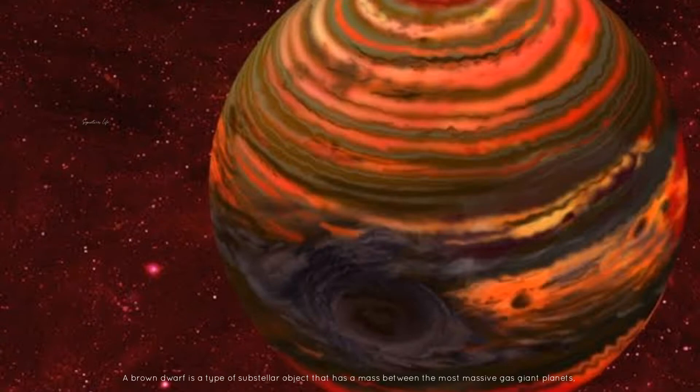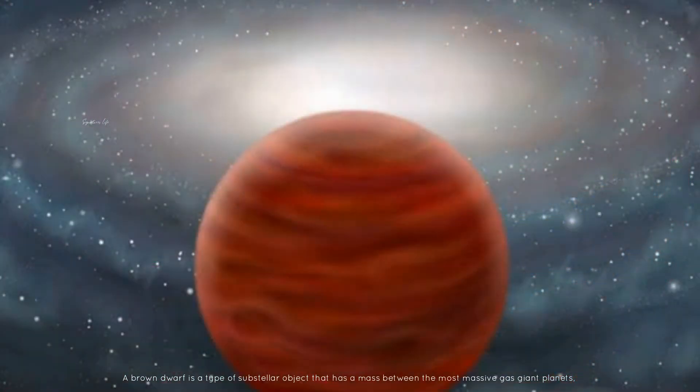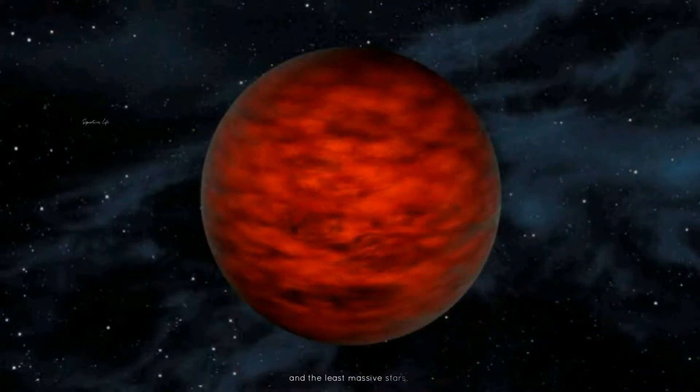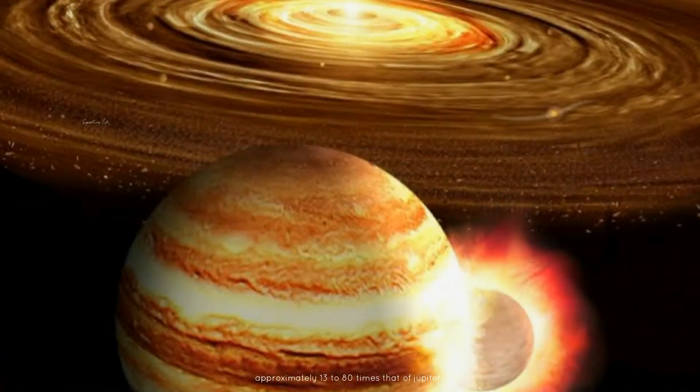A brown dwarf is a type of substellar object that has a mass between the most massive gas giant planets and the least massive stars, approximately 13 to 18 times that of Jupiter.